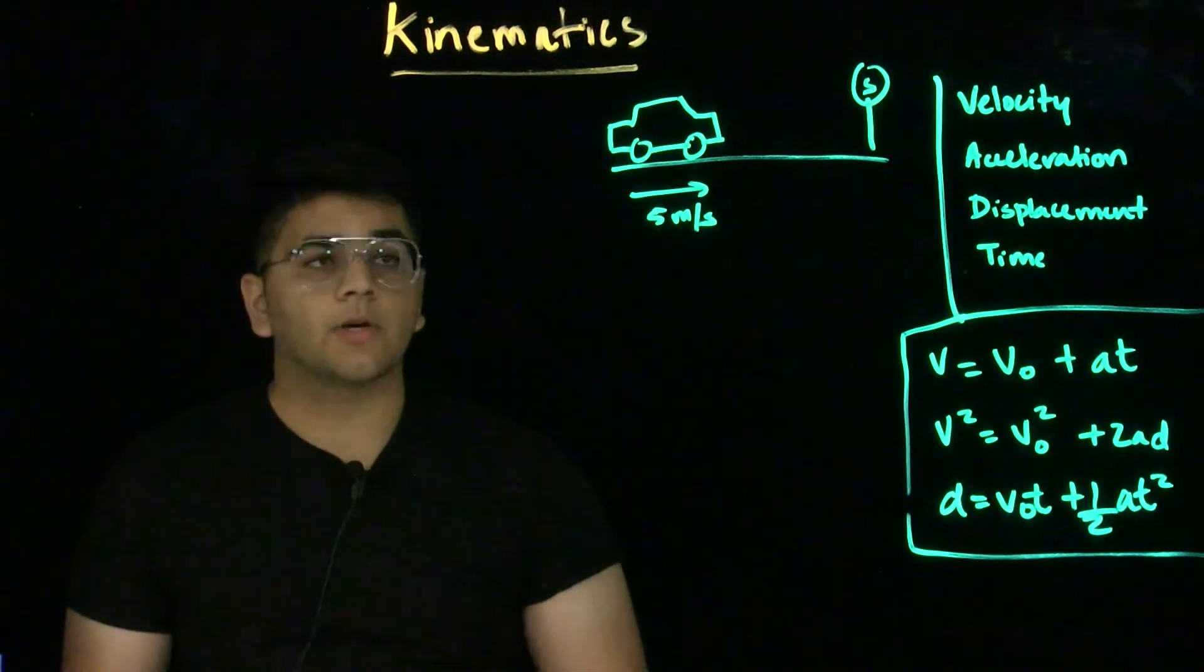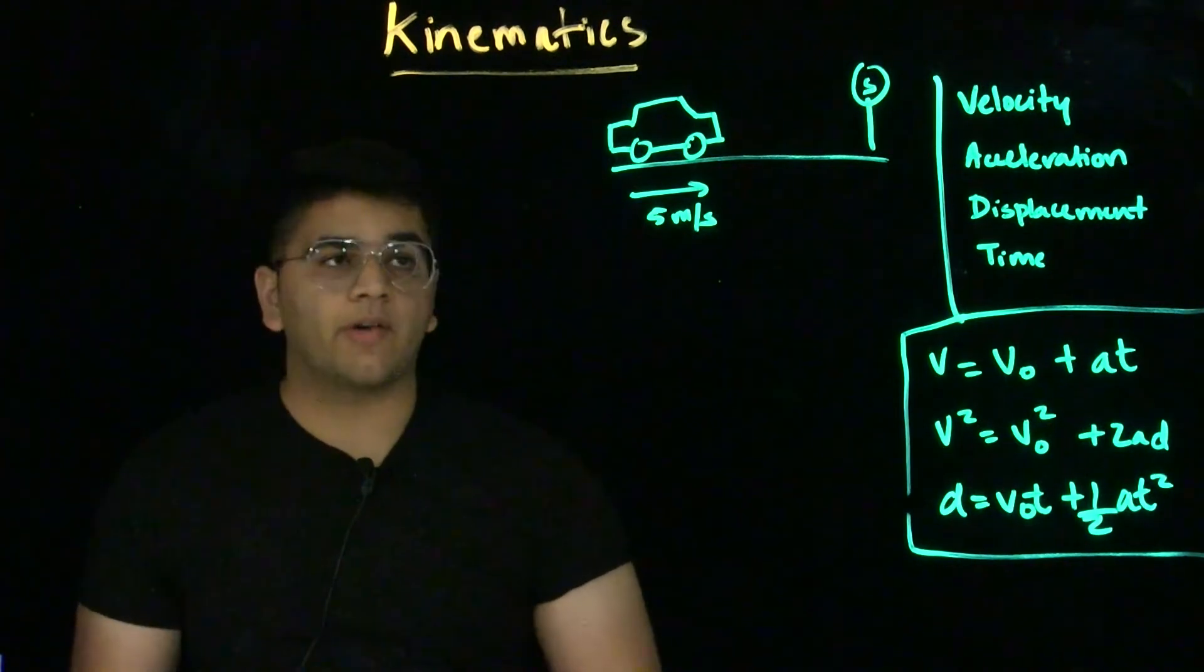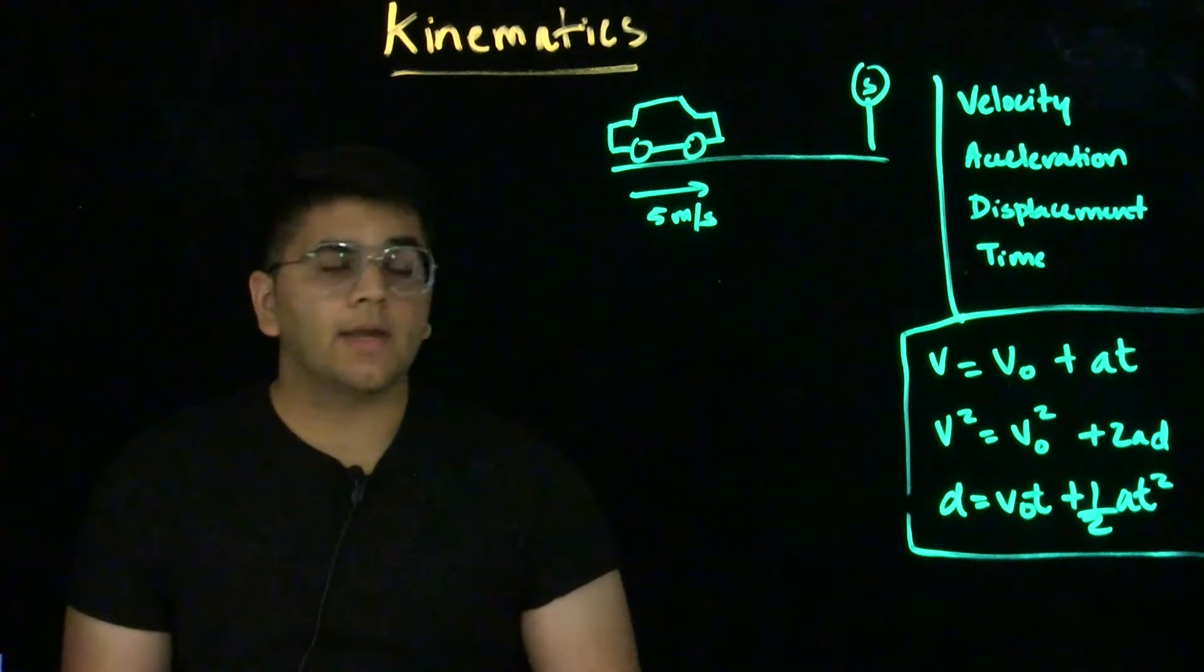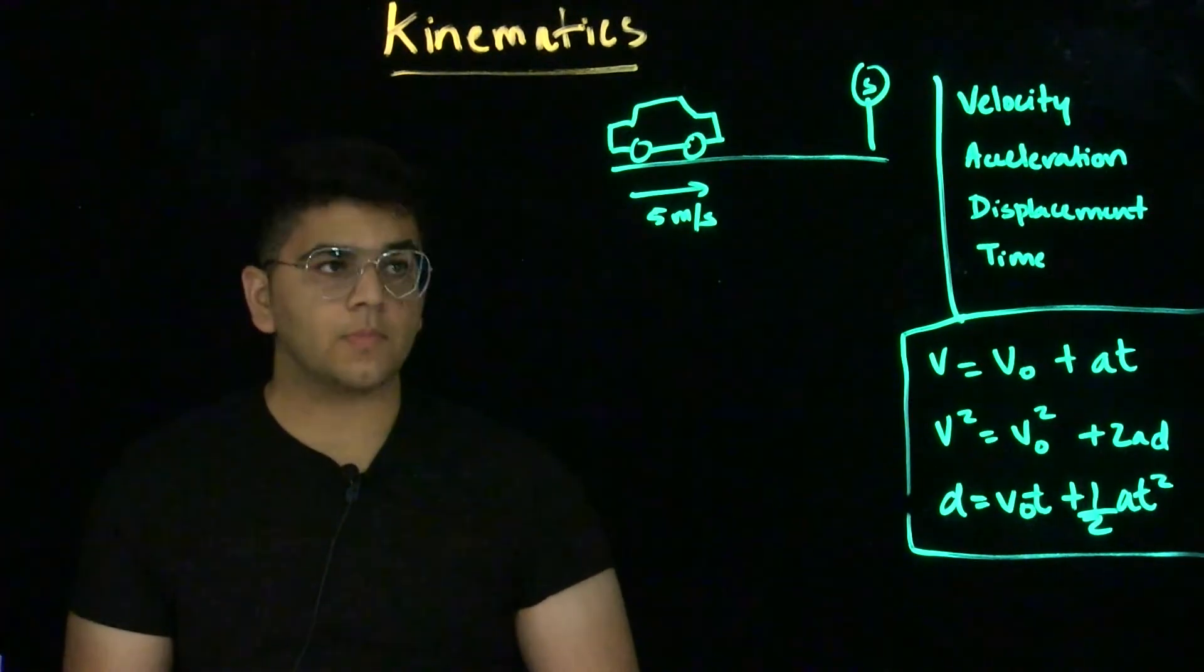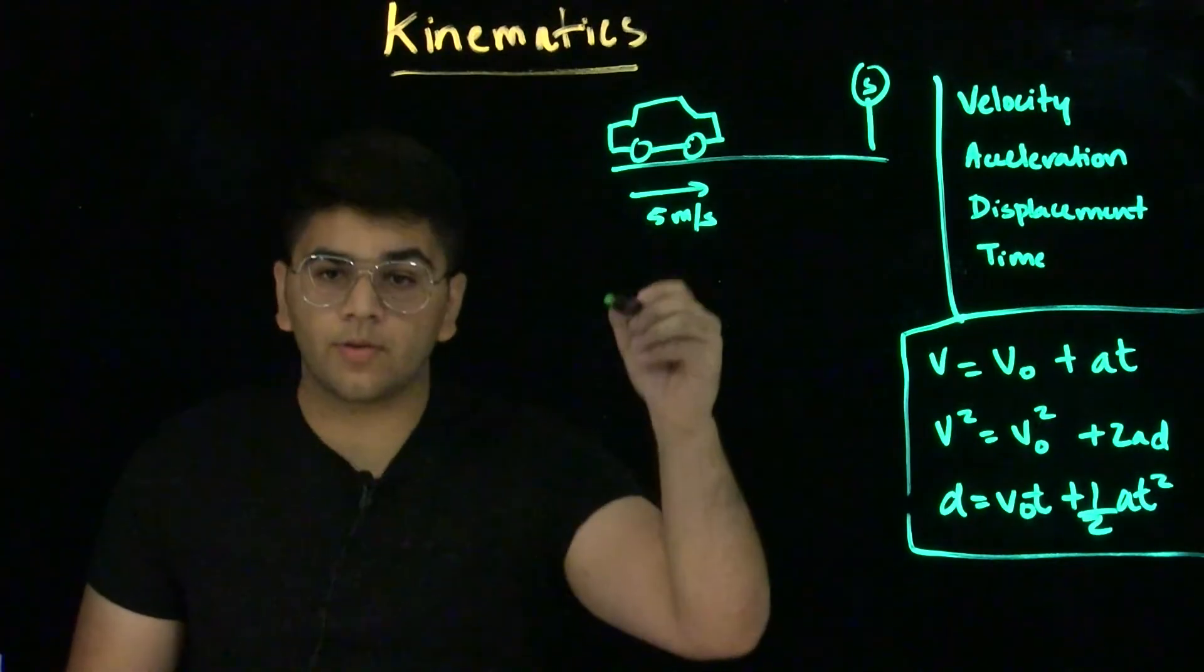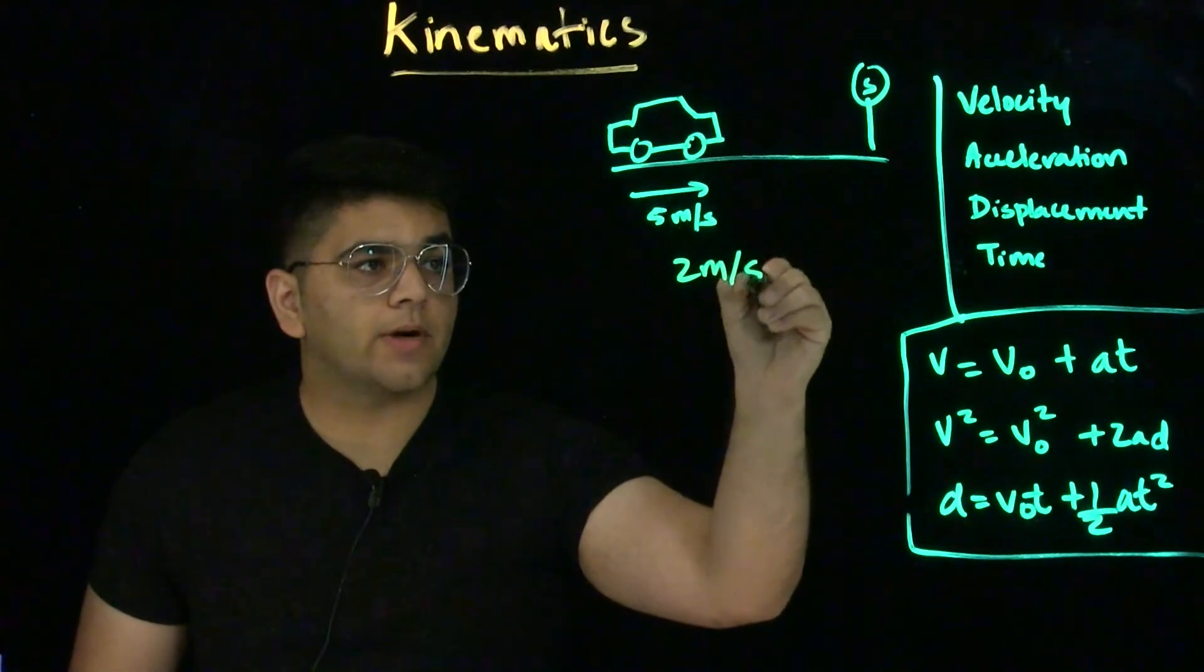Let's look at this problem first. Let's say there's a car traveling at 5 meters per second and it sees a stop sign and the driver slams on the brakes. Let's say the acceleration due to the brakes is 2 meters per second squared.